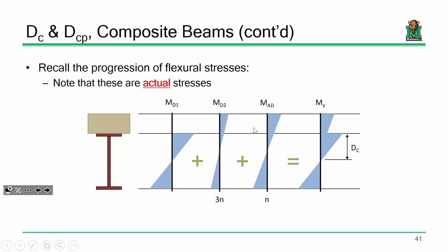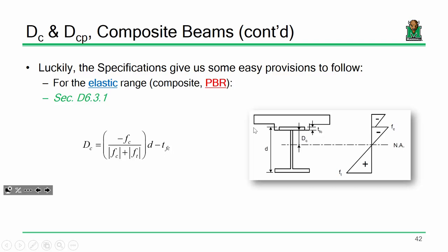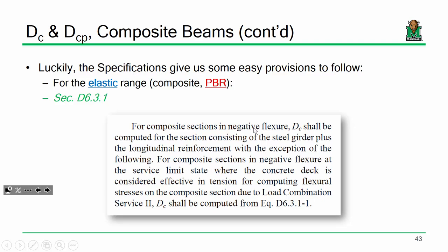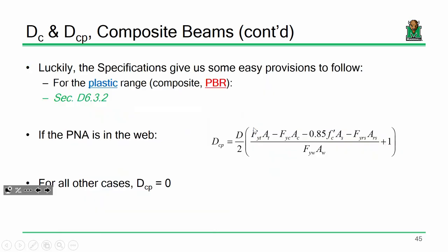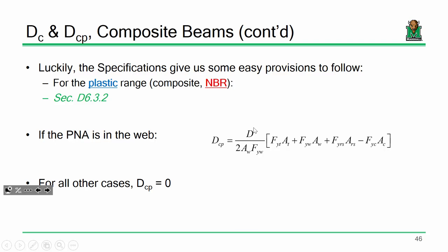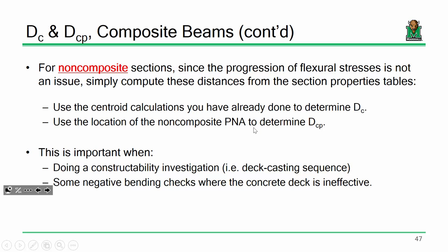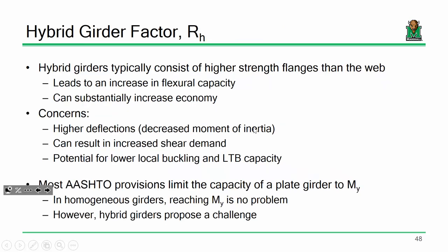With bridge engineering, sometimes it's not quite straightforward. If you're dealing with a non-composite shape, it's just where the centroid is — pretty simple. But with a composite shape undergoing staged construction, you've got to be careful with computing D_c. Luckily the spec helps us out — there are nice plug-and-chug formulas for the elastic range in positive bending, for the elastic range in negative bending, and some language for the plastic range, D_sub_c_p. In many cases it's zero. For a non-composite shape, you don't need to do all this — it's just where the centroid is.